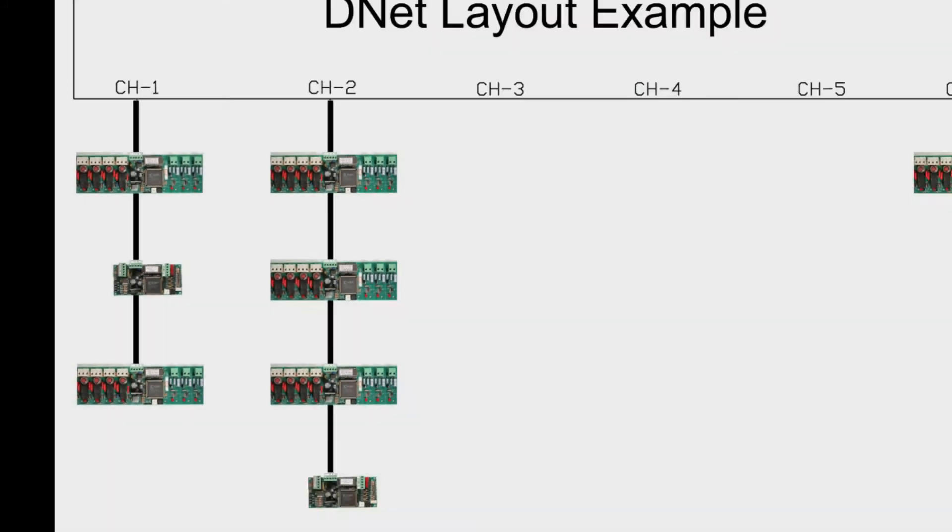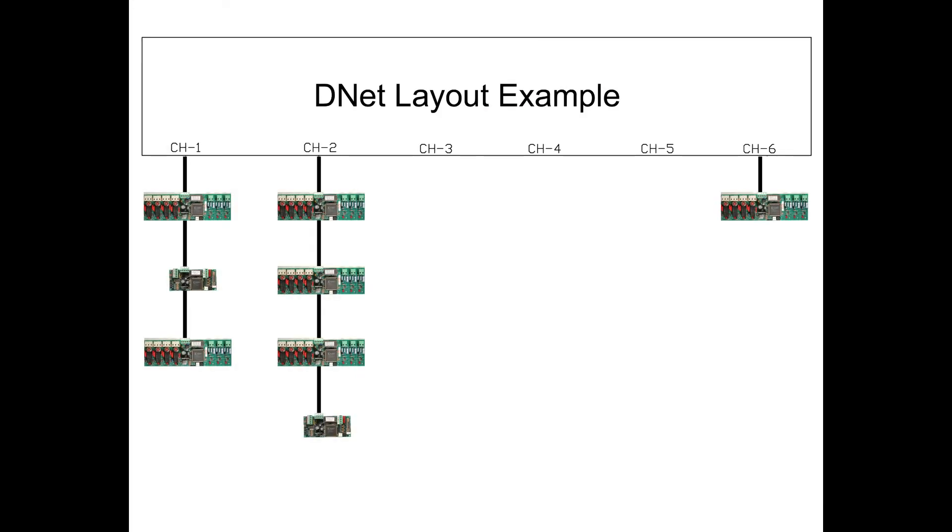With DNET, there are six communication channels for the double backer as well as six communication channels for each single facer MLC cabinet. Each channel string may have a number of cards connected in parallel. Your machine is probably laid out different, but we will just show this example for illustration.